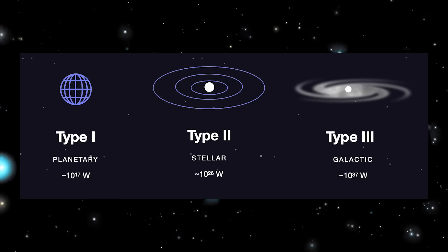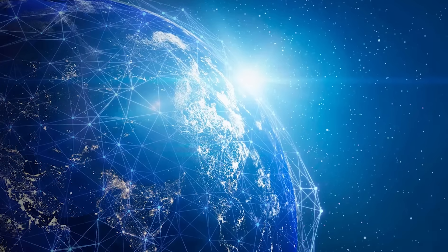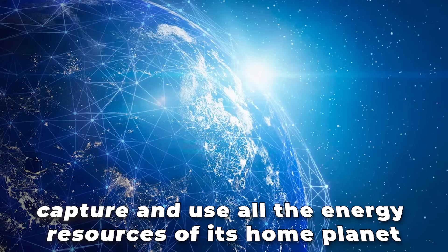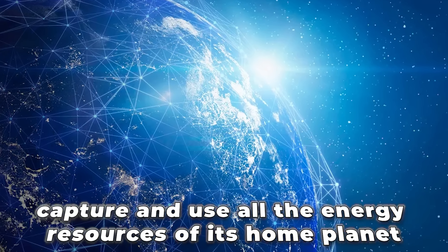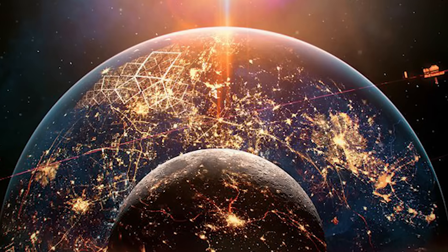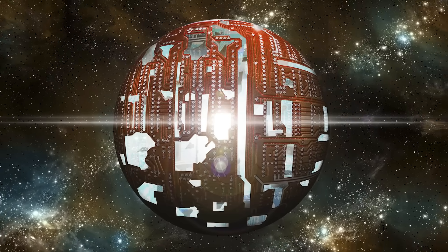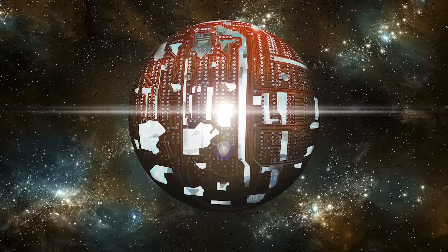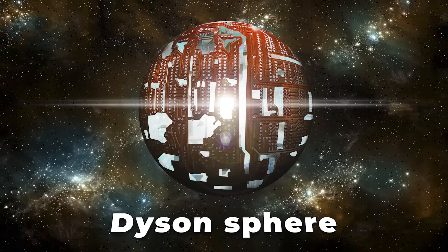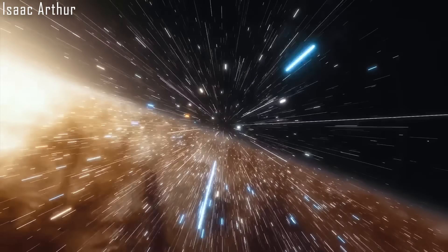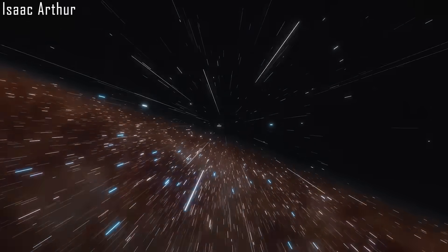He divided them into three categories where a Type I civilization would be able to capture and use all the energy resources of its home planet. A Type II civilization would be capable of harnessing all the energy resources of its home star. It is at this point that Nobel Prize-winning physicist Freeman Dyson imagined an advanced civilization constructing a massive sphere around their star, famously known as the Dyson Sphere. Finally, a Type III civilization would be able to use all the energy produced by all the stars in their home galaxy.